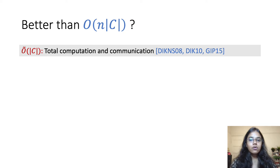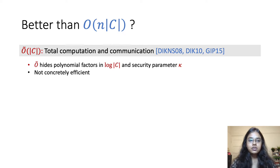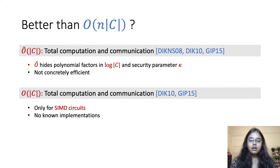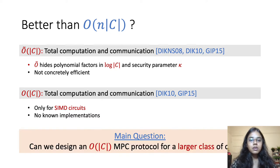We already have protocols with a better asymptotic complexity of O-tilde C, but these protocols are not concretely efficient. The O-tilde notation hides polylogarithmic factors in the size of the circuit and polynomial factors in the security parameter. We also know of order C MPC protocols, but only for a special restricted class of circuits called SIMD circuits. The problem with these order C protocols is also that there are no known implementations of them. So the main question we consider in this work is whether we can design order C MPC for a larger class of circuits.